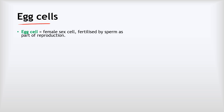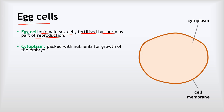The first of our specialised animal cells is the egg cell. The egg cell is the female sex cell, and its job is to be fertilised by sperm as part of reproduction. In terms of its adaptations, it has four key things. The first is its cytoplasm — all cells have cytoplasm, but the cytoplasm in an egg cell is packed with nutrients, which will enable the rapid growth of the embryo when the egg cell gets fertilised.